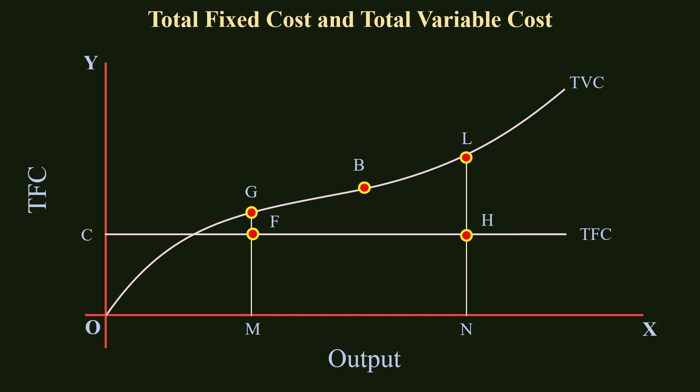TVC, the inverted S-shaped curve, is the Total Variable Cost Curve. Expenditure incurred on variable factors like labour and raw materials is called Total Variable Cost. In the absence of any output, Total Variable Cost is zero — it is zero when output is zero. It slopes upwards starting from the origin and increases with an increase in output.